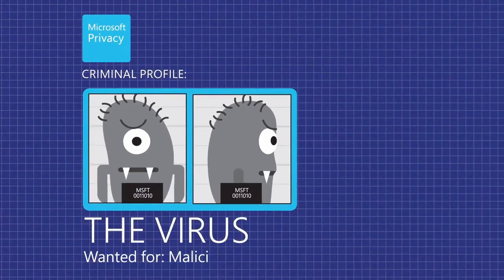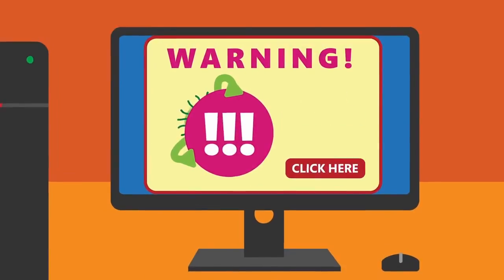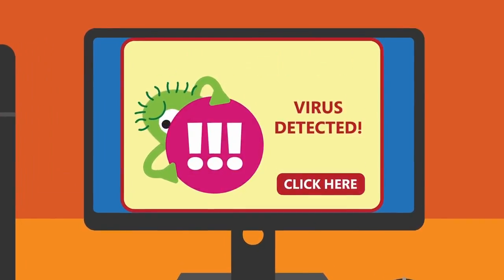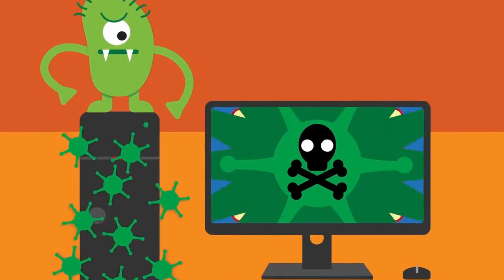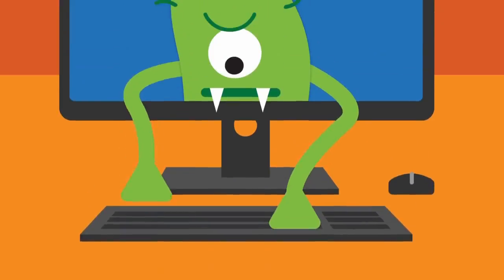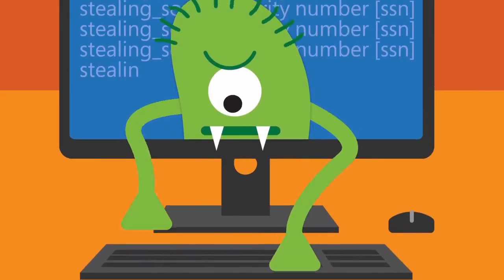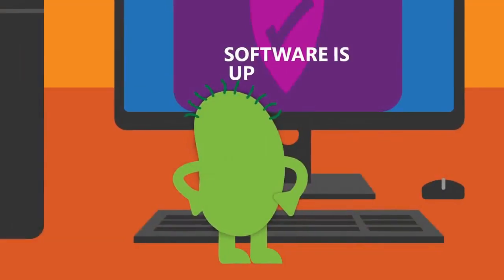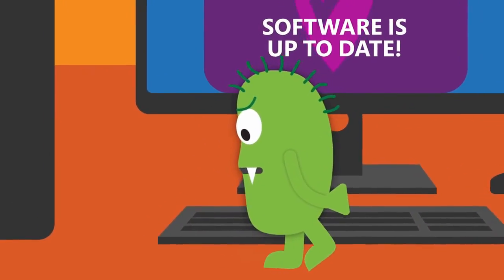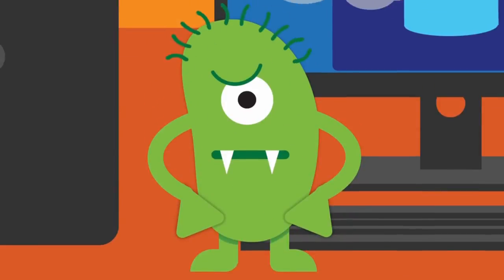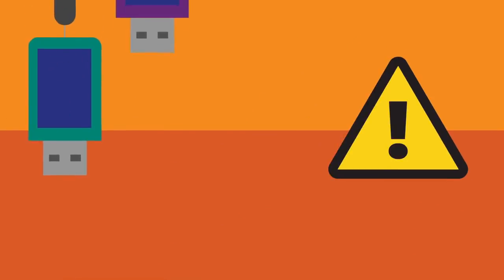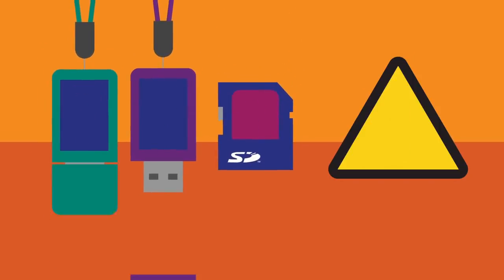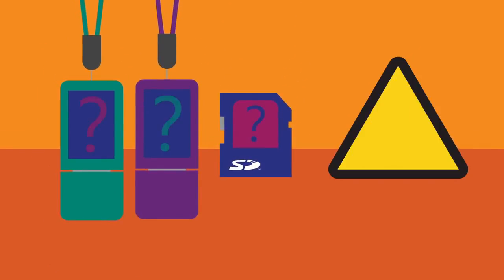Profile: the virus. Wanted for malicious equipment destruction. Can be disguised as online virus warnings, email attachments, files or photos. Infects devices with malicious software and can take over your device for other malicious purposes. Defense tips: Keep all software, web browsers and operating systems up to date. Install and run anti-malware software. Don't put unknown flash drives or secure digital cards into your device.